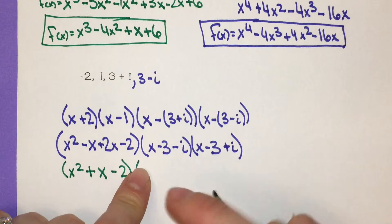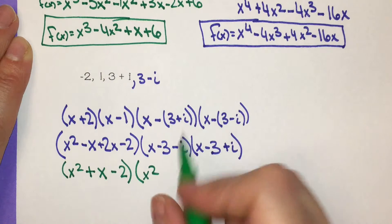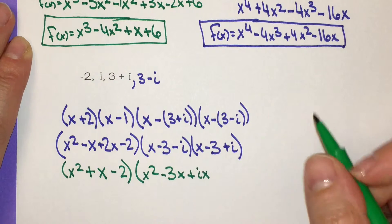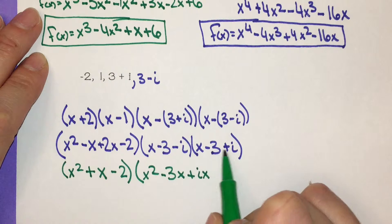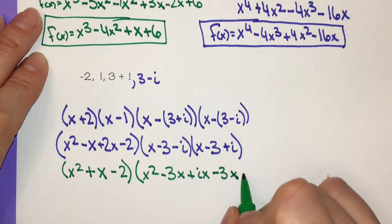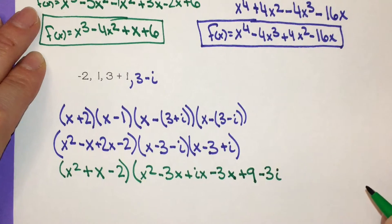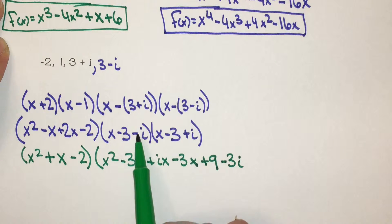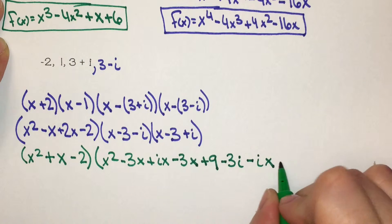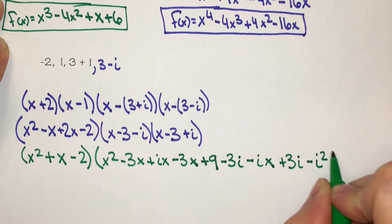Now multiplying the conjugate pair together: x times x is x squared, x times negative 3 is negative 3x, x times i is positive ix. Then negative 3 times x is negative 3x, negative 3 times negative 3 is positive 9, negative 3 times i is negative 3i. And multiplying by i: i times x is positive ix, i times negative 3 gives plus 3i, negative i times negative i is negative i squared.